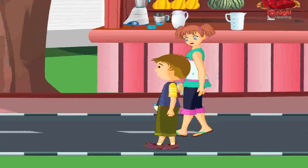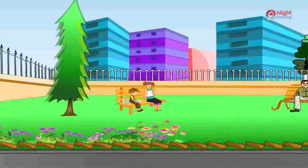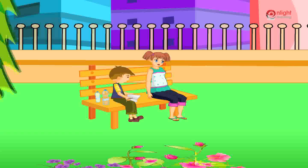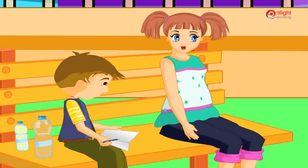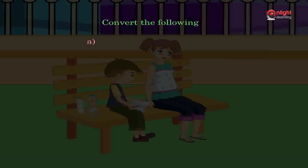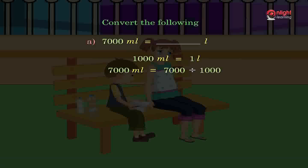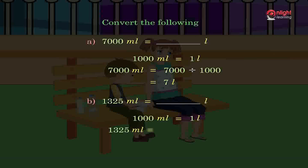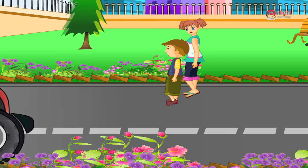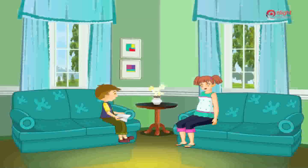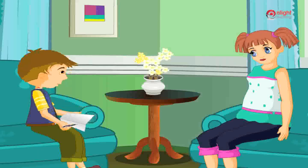Now I have understood the method of converting and solving these problems. Sam has understood the method — have you? Then try to solve the problems given below. Convert the following: 7000 milliliters equals how many liters? 1325 milliliters equals how many liters? 2000 milliliters?